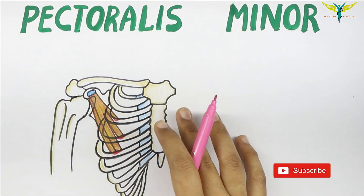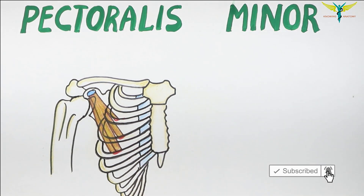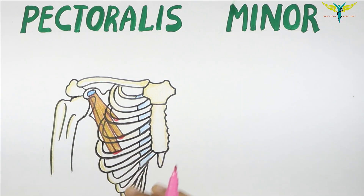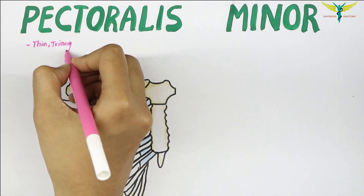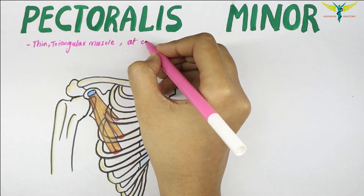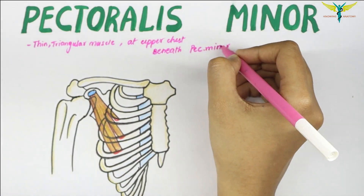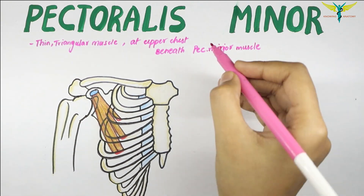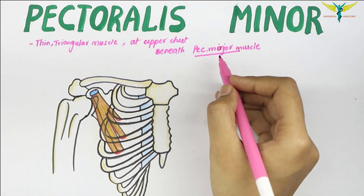The pectoralis minor muscle is a thin triangular muscle situated at the upper part of the chest, beneath the pectoralis major muscle. The pectoralis minor muscle lies deeper to the pectoralis major muscle.